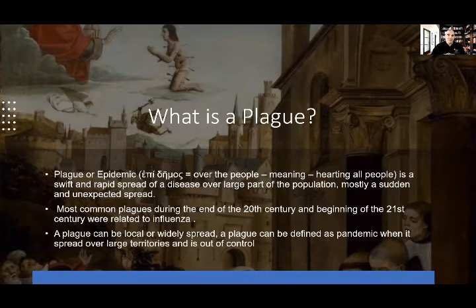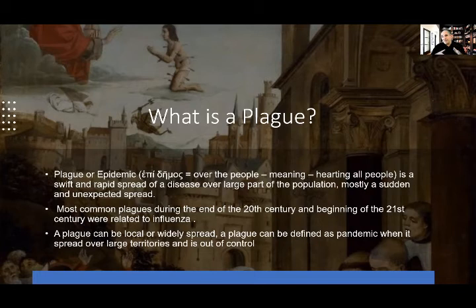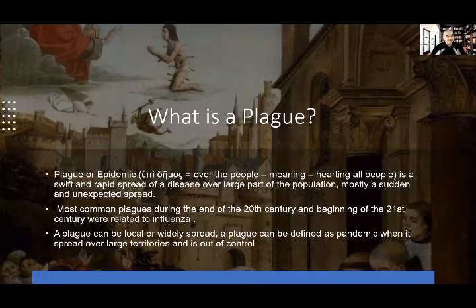Another means of determining a plague is the magnitude and land scale it covers. If it's a very small and confined area, that will be a disease. If it covers a global or very large territory across different nations, that will be a plague or pandemic. The most common plagues through the 20th and into the 21st century were mostly associated with influenza — SARS, swine flu, bird flu, Spanish flu. And that is why COVID-19 is categorized as a pandemic — it is global.